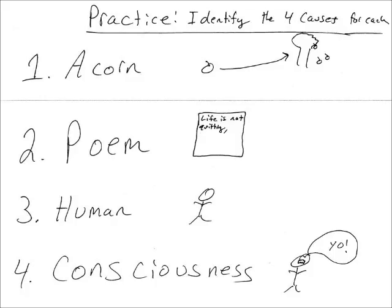Now let's do a little activity before we get into more depth into these four causes. This activity asks you to identify the four causes for each of four things. The first one is an acorn. The material cause of the acorn is what it's made of — that's protein, carbs, calcium, and so on. The efficient cause is what pushes it into existence, and that's the tree, the water, the soil, the sunlight, and so on. The formal cause — what it's striving to be — is an acorn tree.